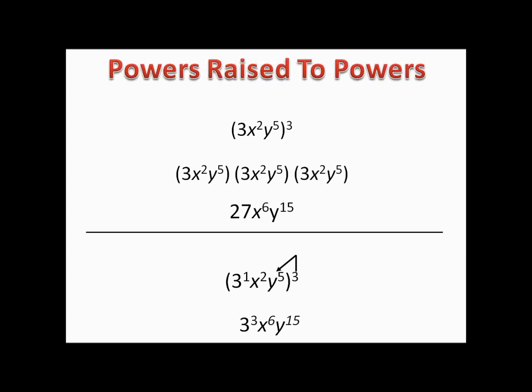So the moral of the story is: if you have an expression all raised to a power, just distribute that outside exponent to everything inside. When you do that, you multiply the exponent from the outside with each one on the inside.